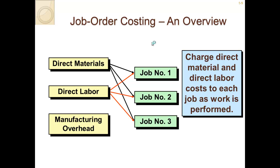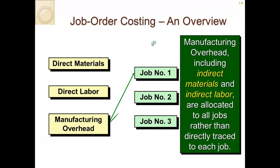Direct labor and direct materials are traced directly to each job. For example, all materials the construction company brings on site would be traced directly to the Elms College job. Manufacturing overhead, however, is different — it can't be directly traced. It includes indirect materials, indirect labor, and is allocated to all jobs. The company calculates a manufacturing overhead rate and allocates it to jobs.